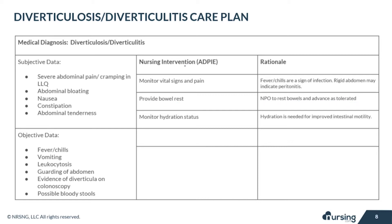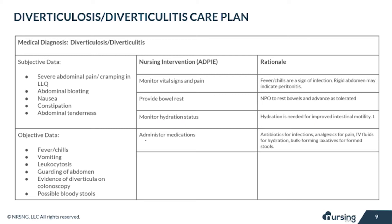Our next nursing intervention is to monitor the hydration status of our patient, because hydration is needed to help improve intestinal motility and keep things moving and healthy. We will administer medications per doctor orders: antibiotics might be provided for infections, analgesics may be ordered for pain, IV fluids to help keep the patient hydrated, and bulk-forming laxatives to help form those stools and keep things as regular as we can.